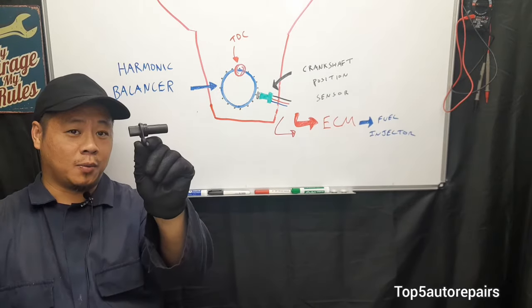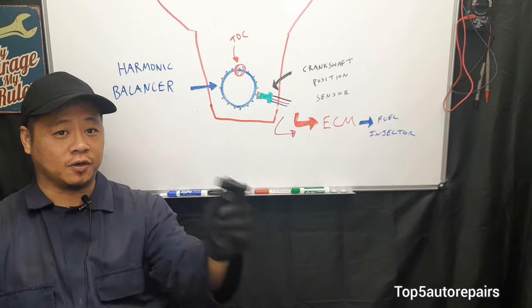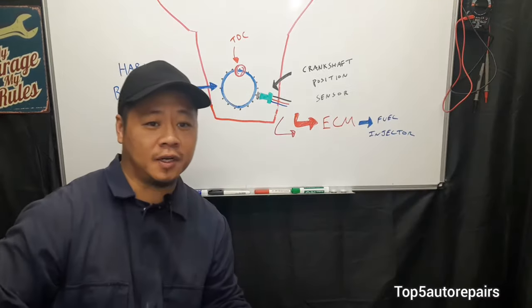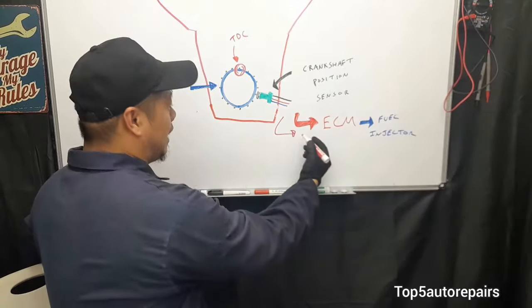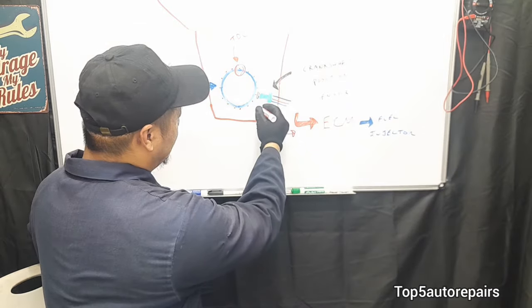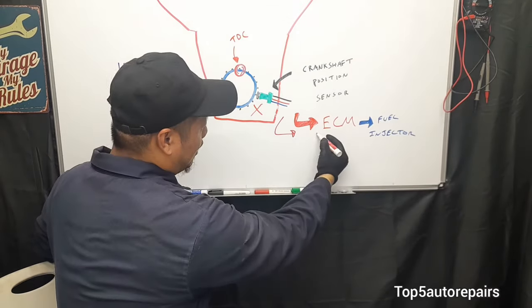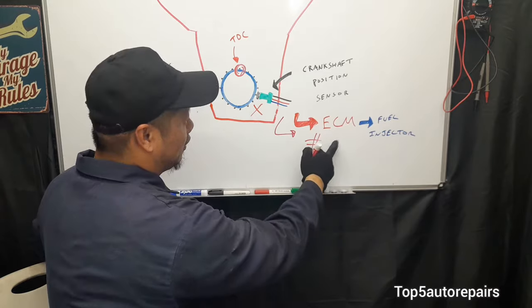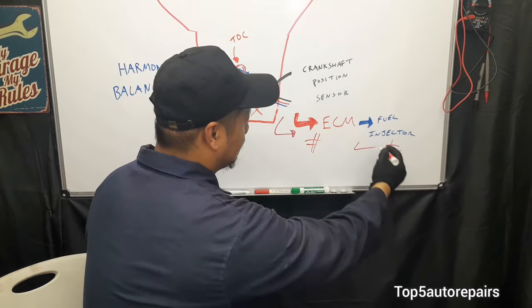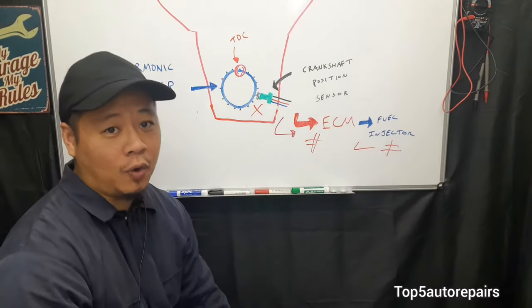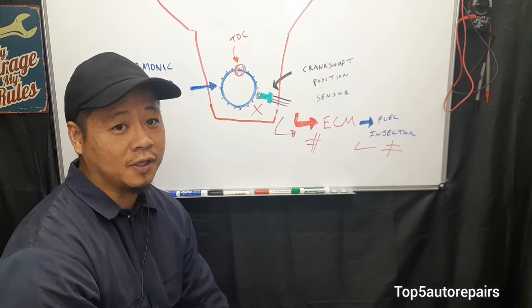When there is a problem with your crankshaft position sensor or some sort of interference, if there is an issue, the signal cannot be sent to the ECM. And when the signal cannot be sent to the ECM, it cannot command the fuel injector to fire. This is why you're going to have intermittent stalling.